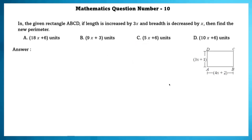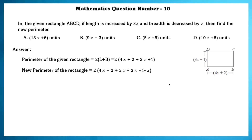Mathematics question number 10. In rectangle ABCD, if the length is increased by 3X and breadth is decreased by X, find the new perimeter. The perimeter of the given rectangle = 2(4X + 2 + 3X + 1). The new perimeter = 2(4X + 2 + 3X + 3X + 1 − X) = 2(9X + 3) = 18X + 6.